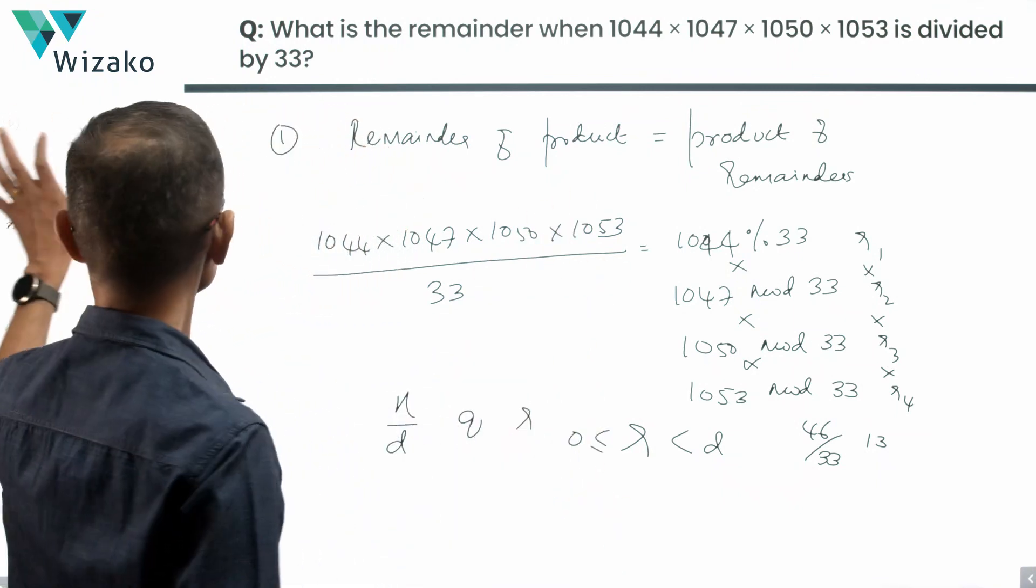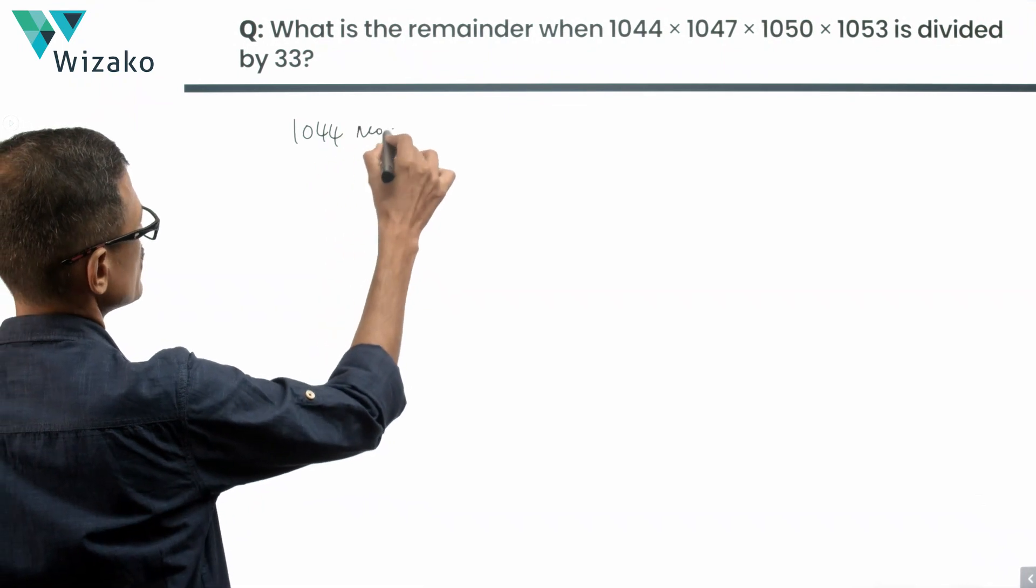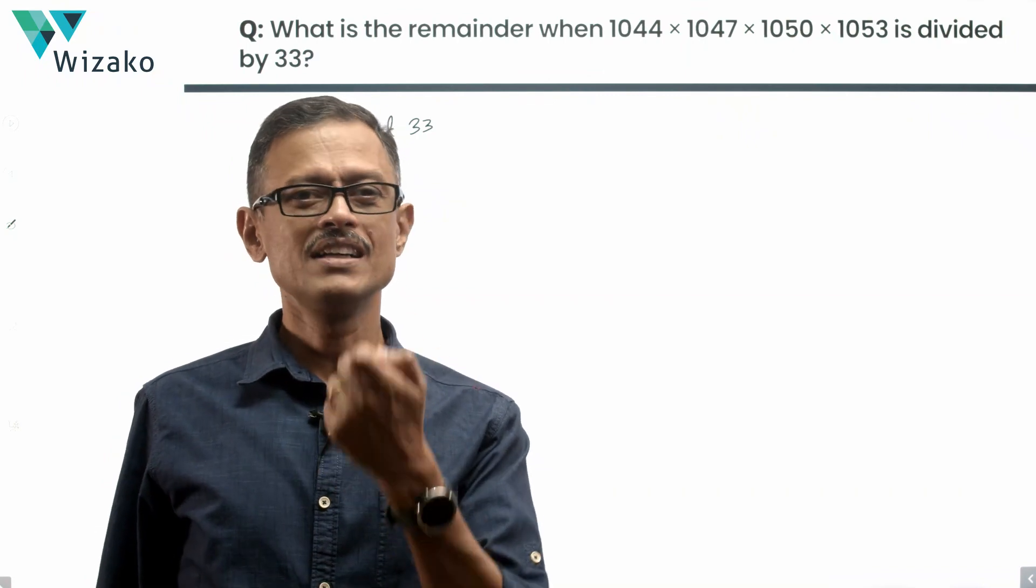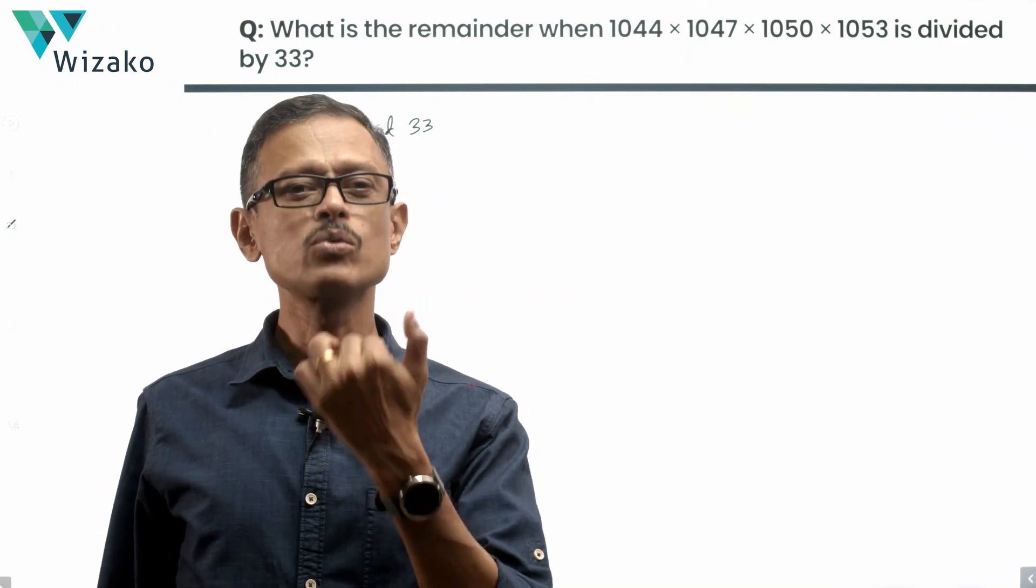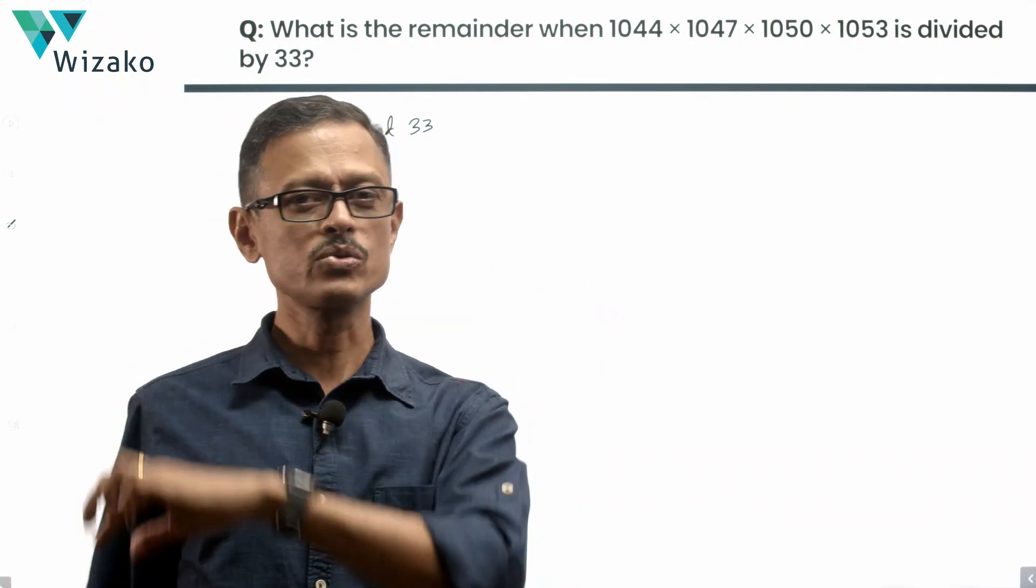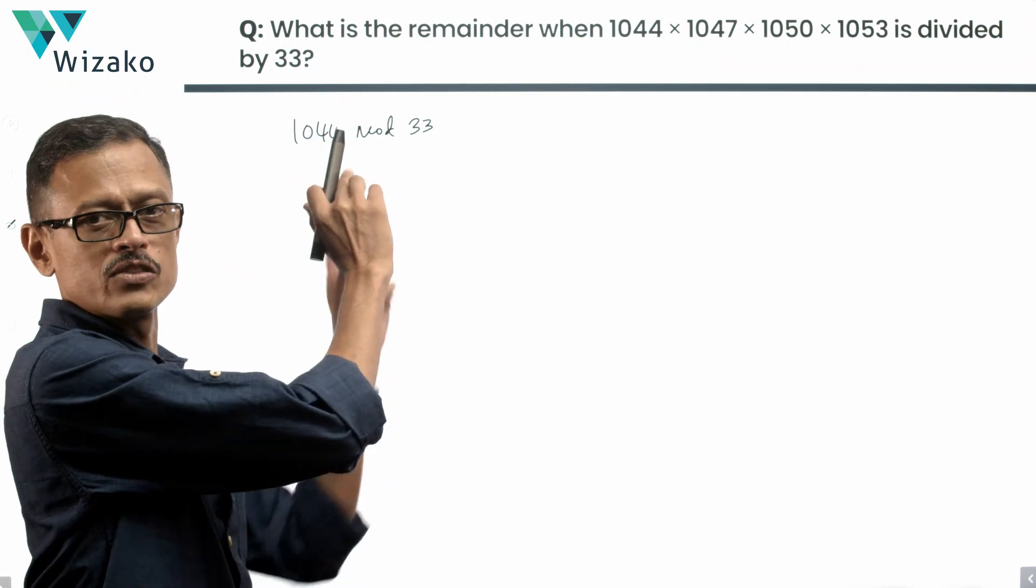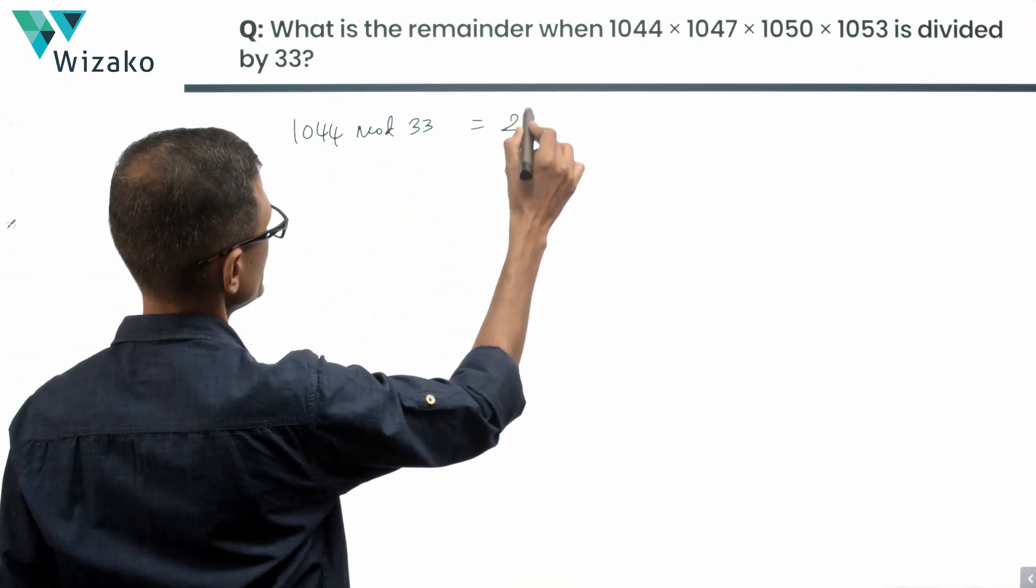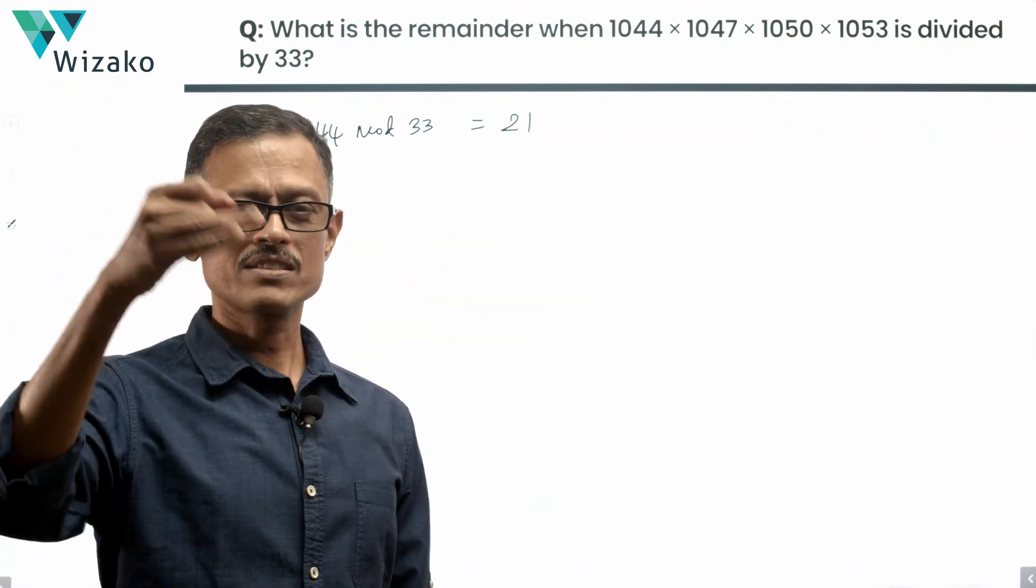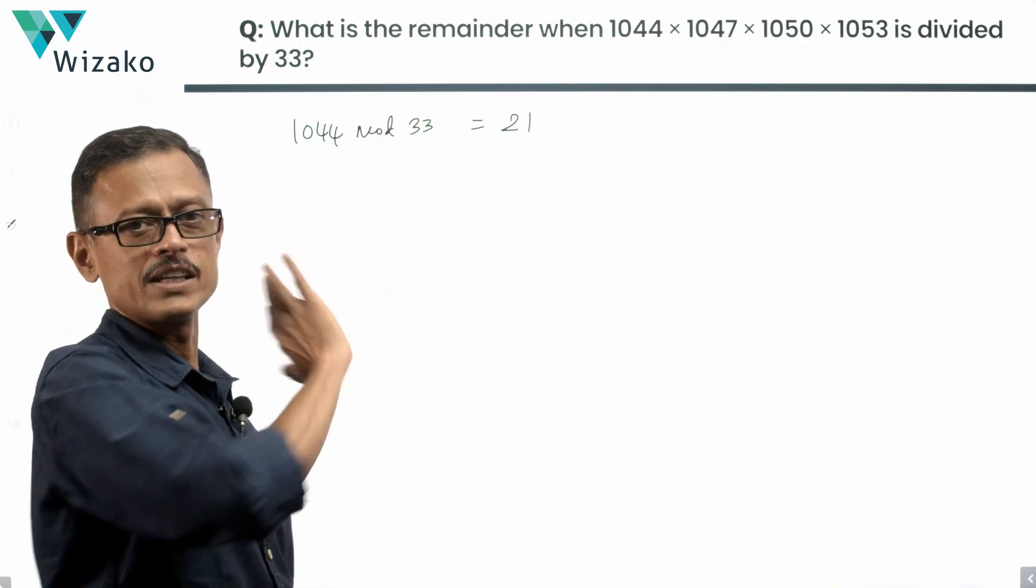To simplify calculations, let me compute the remainders for each of these numbers. 1044 mod 33: 33 times 30 is 990, 33 times 31 is 1023, 33 times 32 is 1056. So 1023 leaves us with a remainder of 21. 1044 minus 1023 is 21.